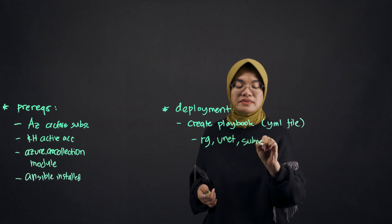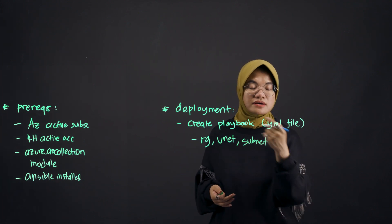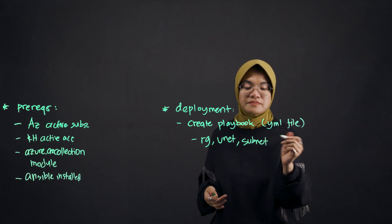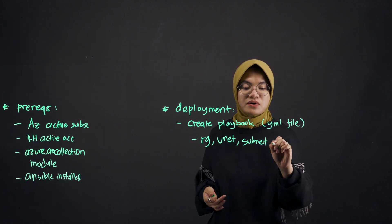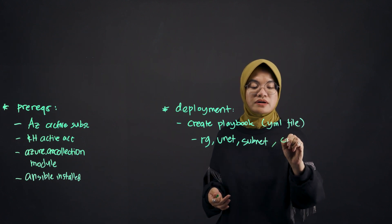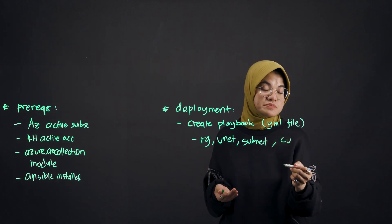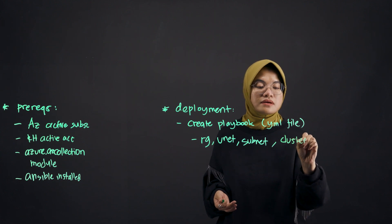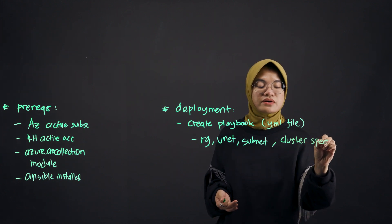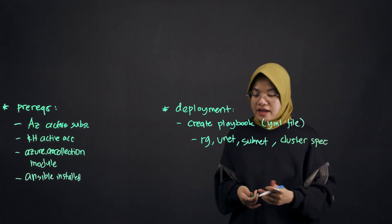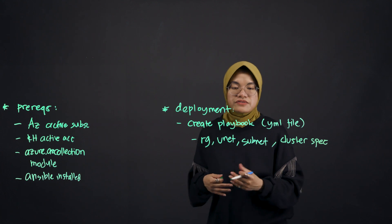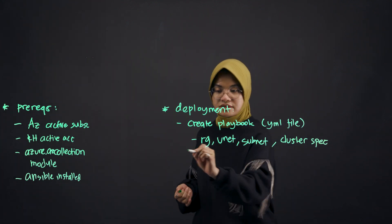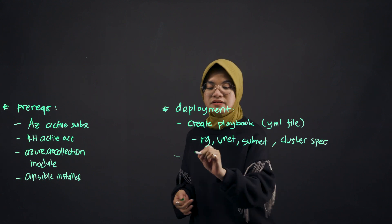And then your subnets — one for each: your control plane and also your worker nodes. You also need to define your OpenShift cluster specifications, which here I'll just call the cluster spec. In addition to this, you would also create an inventory file.